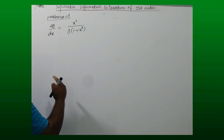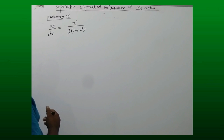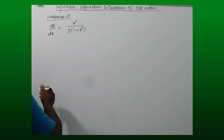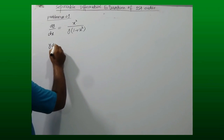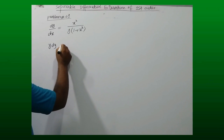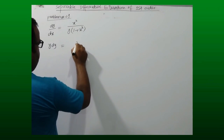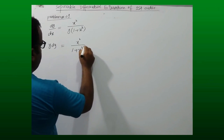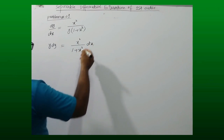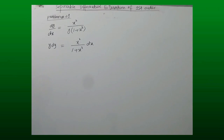We want to separate these variables, and they can be separated easily. y will multiply with dy, and dx will multiply with x squared over 1 plus x cubed. So we can see the variables are separated: y is on one side, x is on the other side — the left-hand side is in pure y and the right-hand side is in pure x.